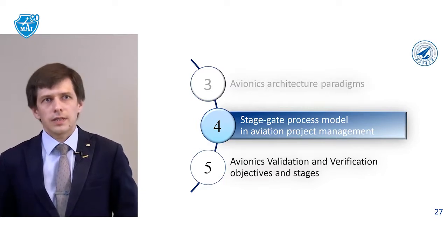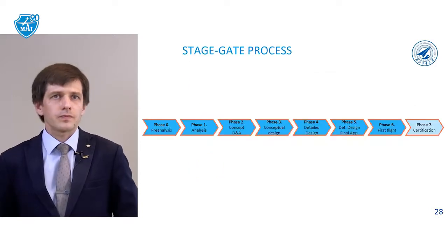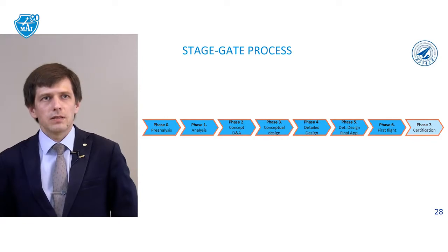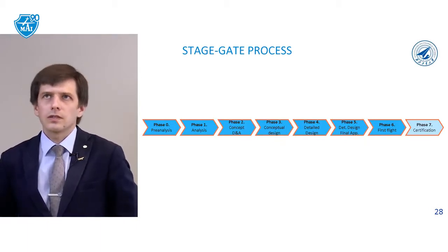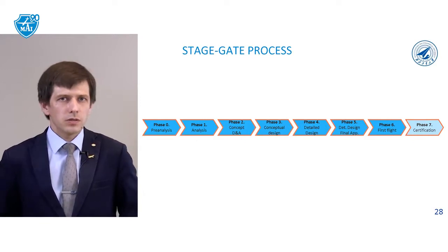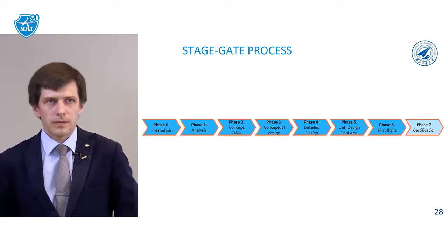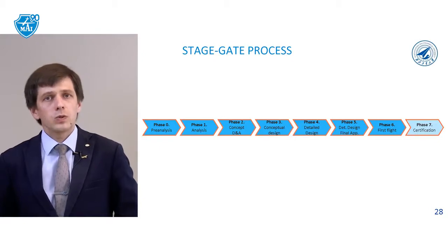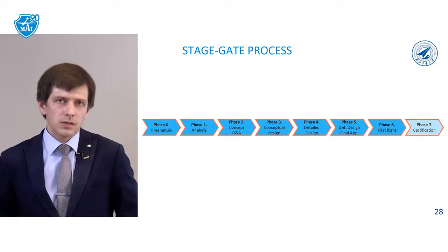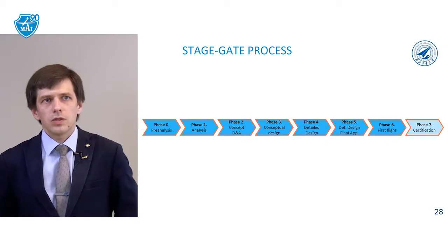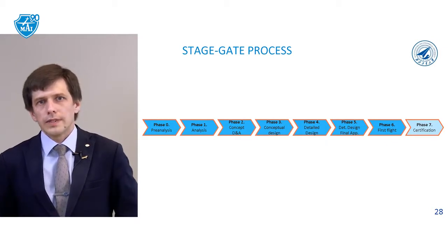The next topic is the Stage-Gate Process Model in aviation project management. We have seven main phases in the development process. Phase 0 is pre-analysis, where we imagine that we want to create a new aircraft. Phase 1 is analysis – we should understand what type of aircraft to design, what functions we need it for, and what number of systems we need.